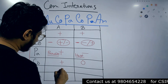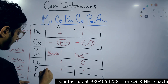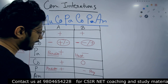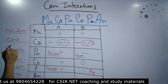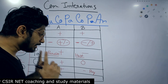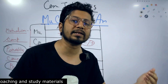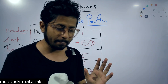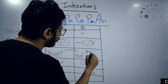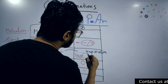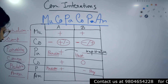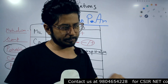Then we have predation — one gets the benefit, the other one is harmed. The predator gets the benefit and the prey is harmed; the prey will be killed. There is a similarity between parasitism and predation: in both, one gets the benefit and one is harmed. But the difference is that in predation, the predator always kills its prey, whereas in parasitism, the parasite always tries to keep the host alive — because if the host dies, the parasite has nothing to feed on.